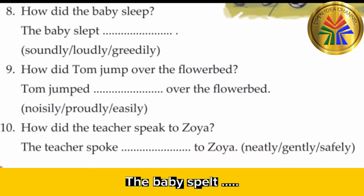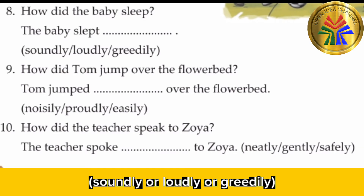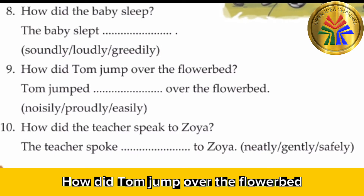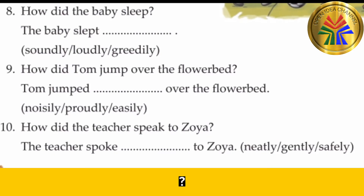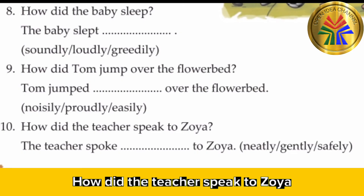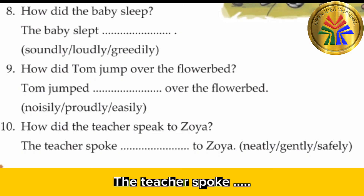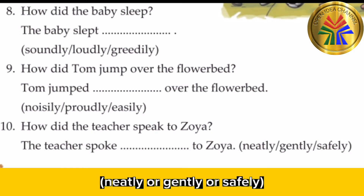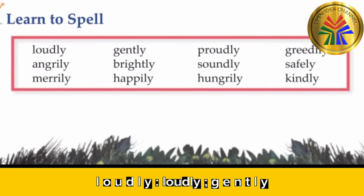Eight: How did the baby sleep? The baby slept — soundly, loudly, or greedily? Answer: soundly. Nine: How did Tom jump over the flower? Tom jumped over the flower — noisily, proudly, or easily? Answer: easily. Ten: How did the teacher speak to Zoya? The teacher spoke to Zoya — neatly, gently, or safely? Answer: gently.